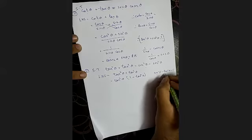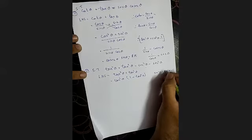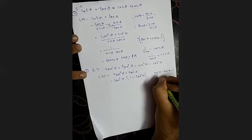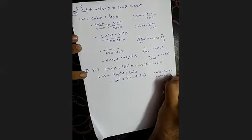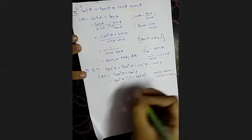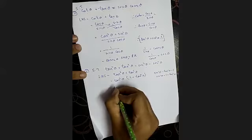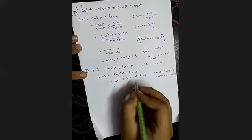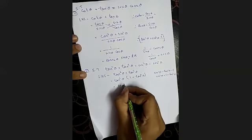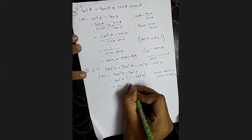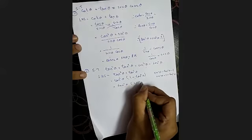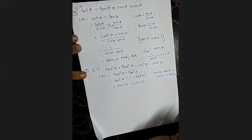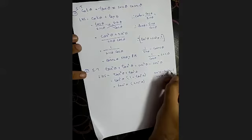So 1 plus tan squared theta is equal to secant squared theta. Instead of this 1 plus tan squared theta, I'm going to substitute secant squared theta. Now, instead of tan squared theta, what can I write?